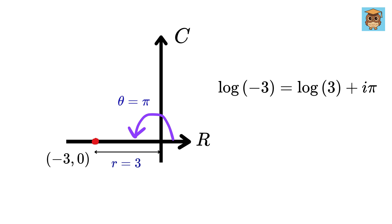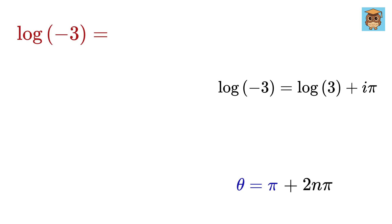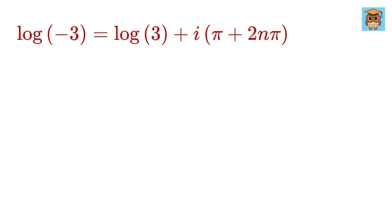Actually, if we go for a general solution, then consider this value of theta, which will not only be pi, it can be pi plus one more rotation, or 2 pi, or pi plus two rotations, or 4 pi, and so on. So, it will be pi plus 2n pi, where n is an integer. Thus, log of negative 3 will be log 3 plus i times pi plus 2n pi.